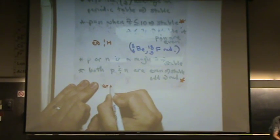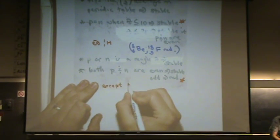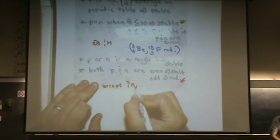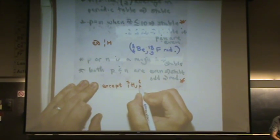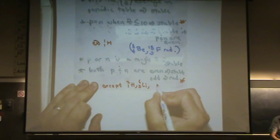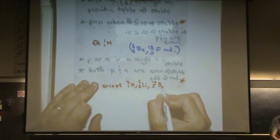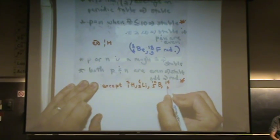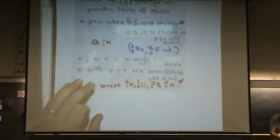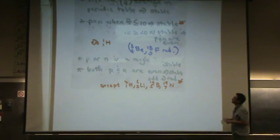So, except deuterium, lithium-6, boron-10, and nitrogen-14. What do you notice about all those four exceptions here?